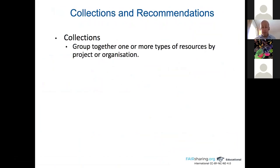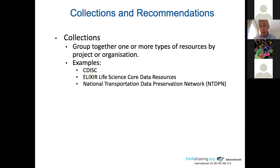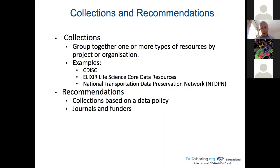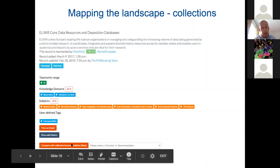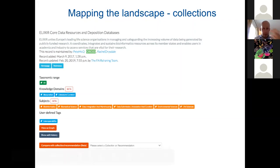If an object has been recommended for use by a policy, those policies appear in the record. There's also admin timestamping — here's a DOI, who maintains the record, and when it was last updated. Collections group together one or more types of resource by project or organization — examples include CDISC for standards in life sciences, the ELIXIR Life Science Core Data Resources, or the National Transportation Data Preservation Network. We also have recommendations based on data policies from journals and funders — examples include Elsevier, Springer Nature, and PLOS.